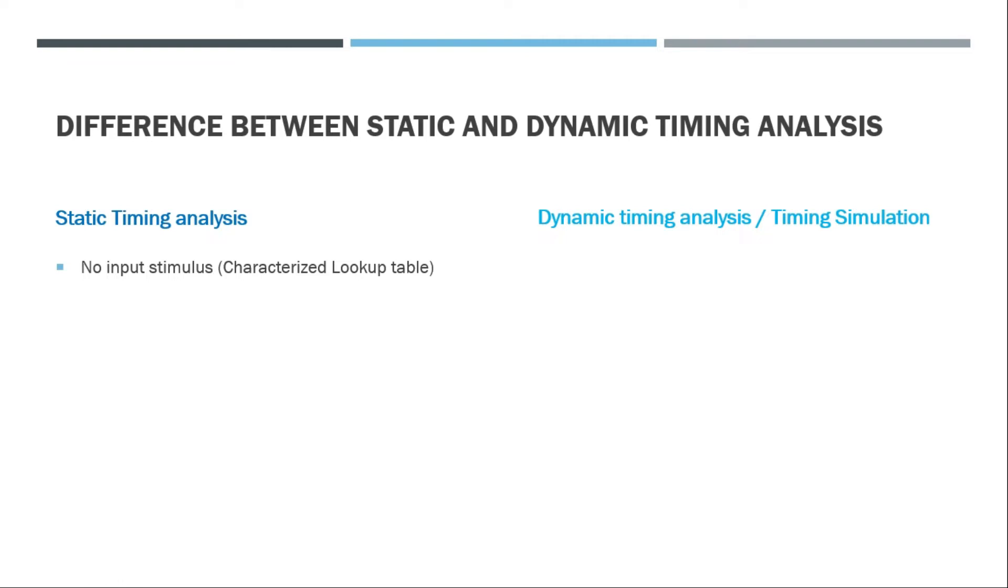For the wire delays, it either estimates the delays or takes the delay from the RC extraction. But timing simulation takes the input stimulus. We need to give the stimulus to the timing simulation and we need to validate the output whether this is the expected output or not.